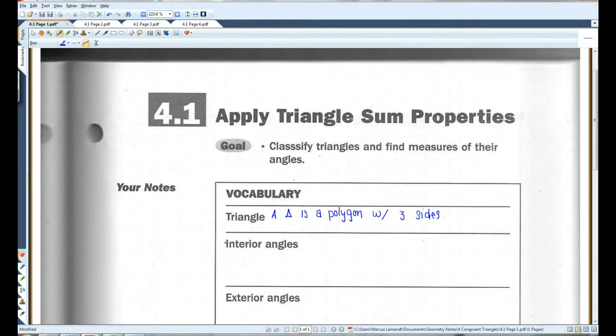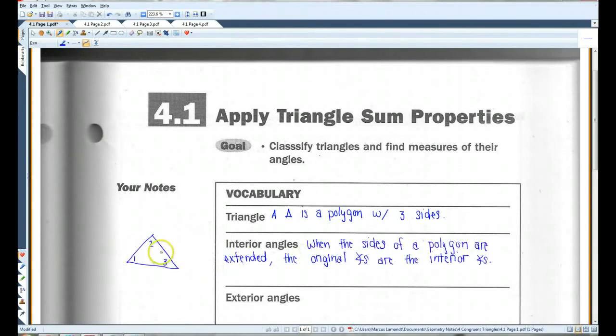Interior angles are angles inside a polygon or a triangle or whatever figure you're looking at. So, for example, in this triangle, angles 1, 2, and 3 are all interior angles.